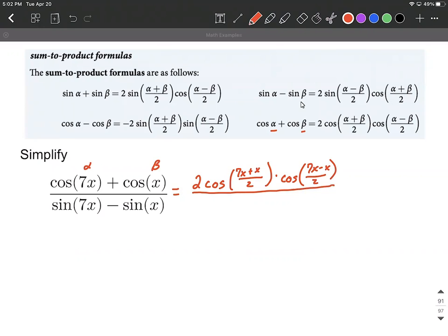For our denominator, we're going to be utilizing alpha and beta to go along with this formula. So this will be 2 sine of (7x minus x) divided by 2, multiplied by cosine of (7x plus x) all over 2.